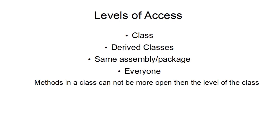So what are the different levels of access? There are four kinds of types: there's class, derived classes, same assembly or package depending on the language, and then just everyone — open to everything.